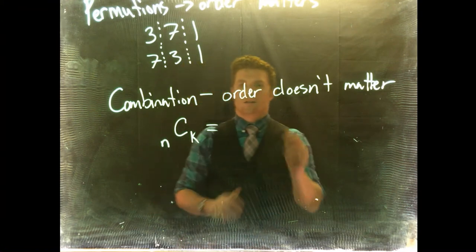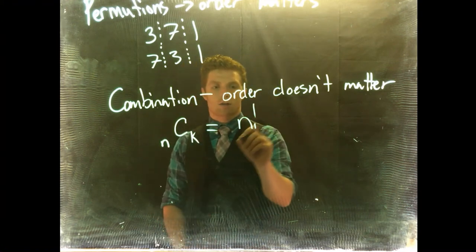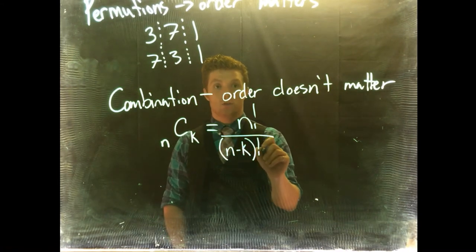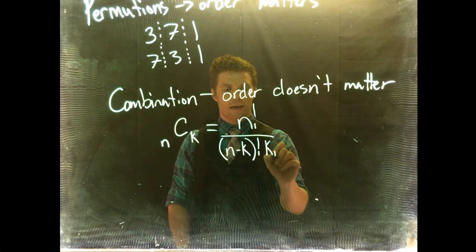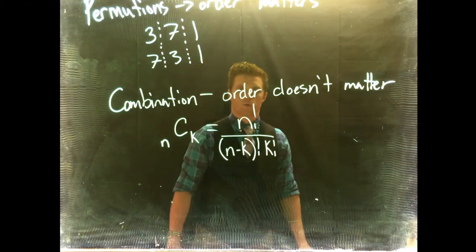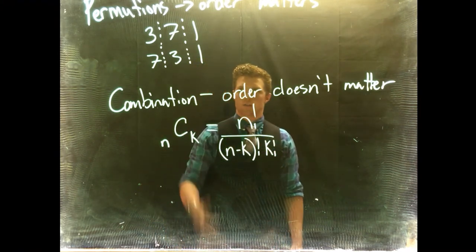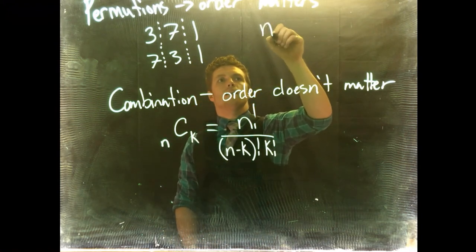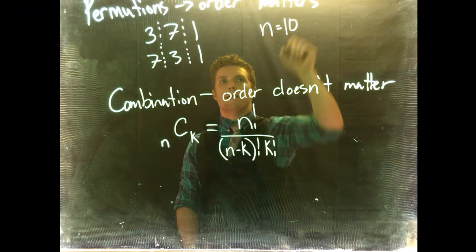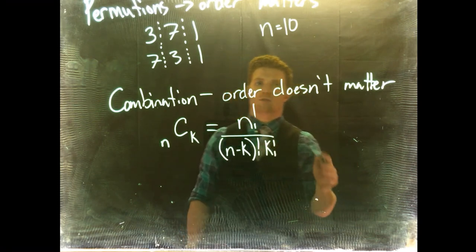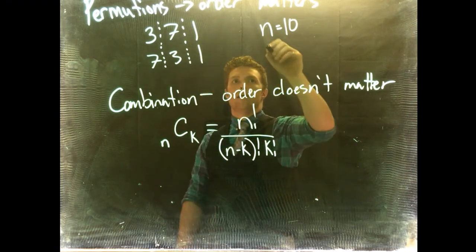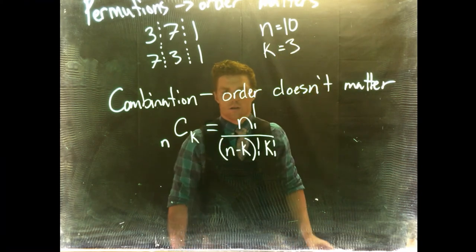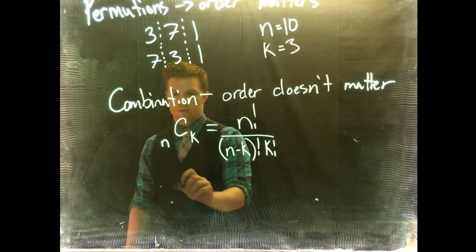So let's give it a shot. What it's going to be is n factorial divided by n minus k factorial times k factorial, so we get that k factorial in there twice. We've got n equals 10 because we have 10 possible options, 0 to 9, for our numbers, and k we're selecting three at a time.